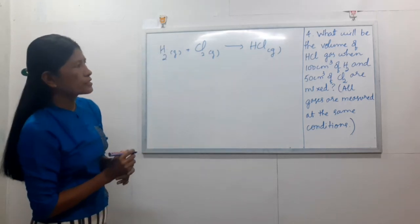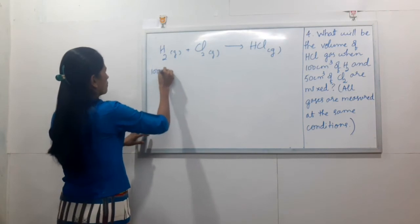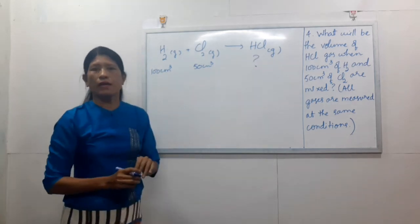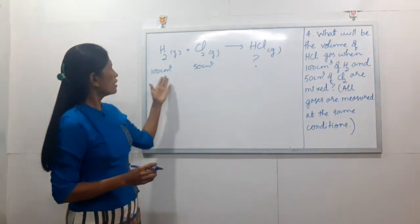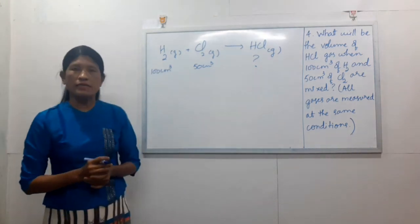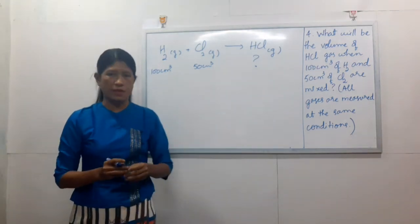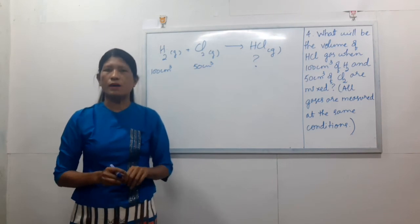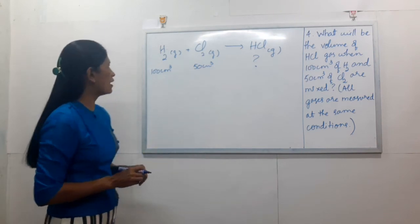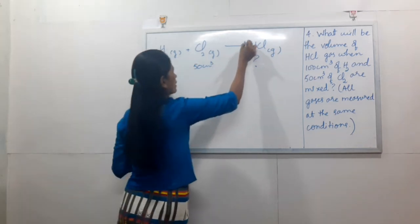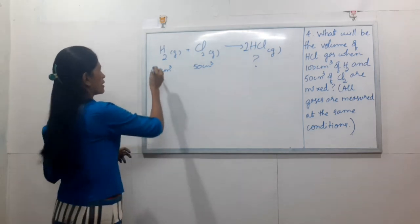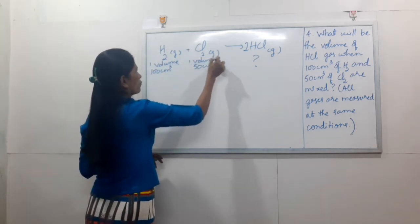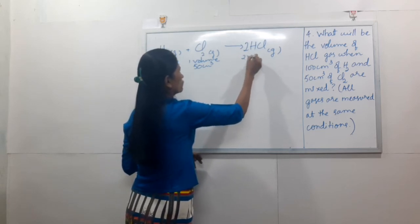The solution for hydrogen chloride gets 100 cm³. The solution for hydrogen chloride gets 50 cm³. This is the equation. We have two ACRs. Two ACRs are two ACRs — two volumes to one volume. Two volumes is one volume.